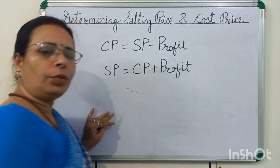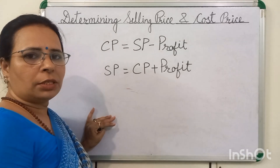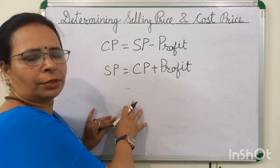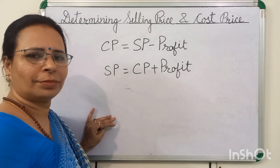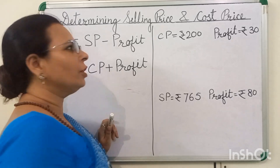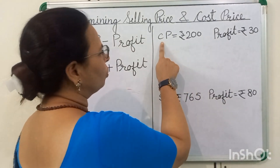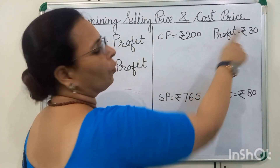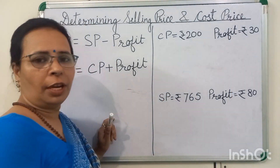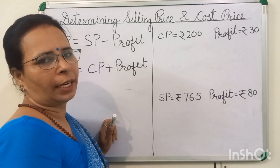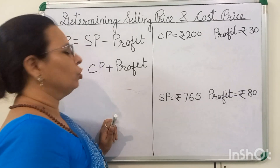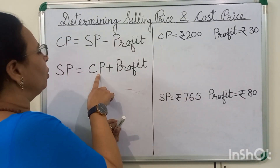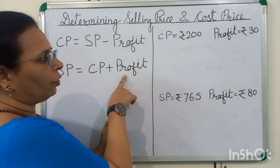Now, we will solve some questions based on these formulas. In the first question, you can see cost price and profit are given and we have to find selling price. What is the formula of selling price? CP plus profit.